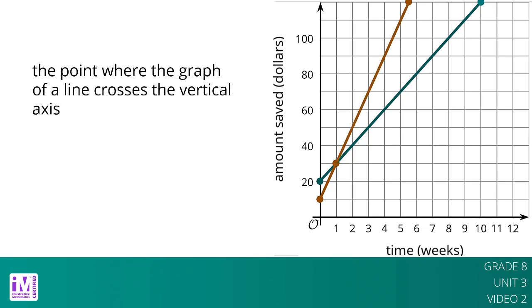The point where a line intersects the vertical axis is called the vertical intercept. When the vertical axis is labeled with a variable like y, this value is also often called the y-intercept. Jada's graph has a vertical intercept of $20, while Lynn's graph has a vertical intercept of $10. These values reflect the amount of money they each started with.